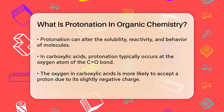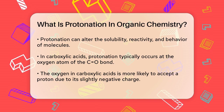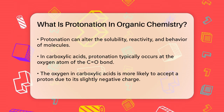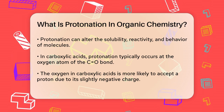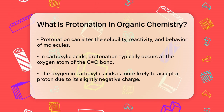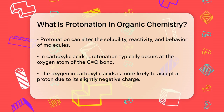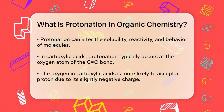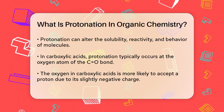Consider carboxylic acids as another example. When a carboxylic acid is protonated, the proton typically attaches to the oxygen atom of the C=O bond. This is because this oxygen has a slightly negative charge due to resonance structures within the molecule, making it more basic and thus more likely to accept a proton. Protonating this oxygen results in a resonantly stabilized species.